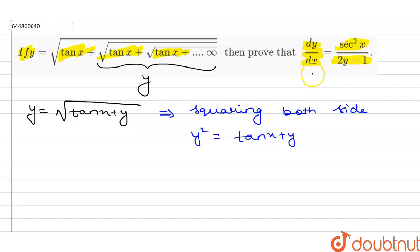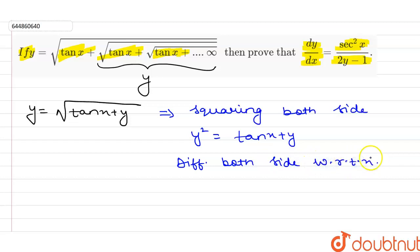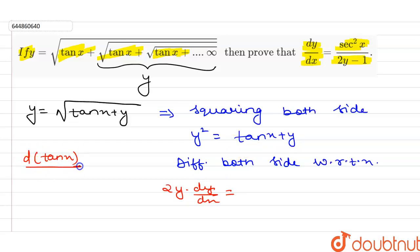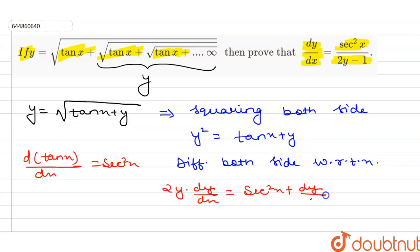Now I have to find dy/dx. Differentiating both sides with respect to x: on differentiating y², I get 2y times dy/dx. This equals the differentiation of tan x with respect to x, which is sec²x, plus the differentiation of y with respect to x, which is dy/dx.